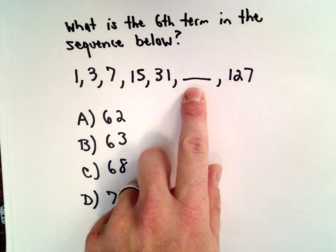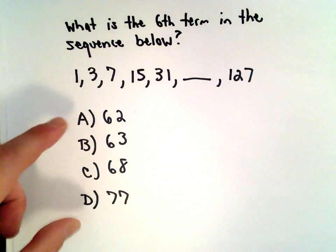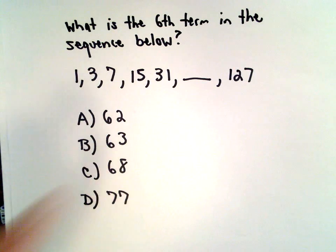We've got to figure out the sixth one, and then it jumps to 127. So we have these four choices: either 62, 63, 68, or 77.